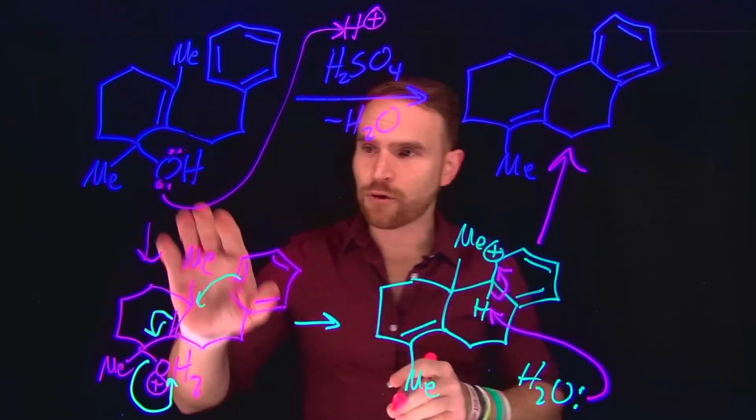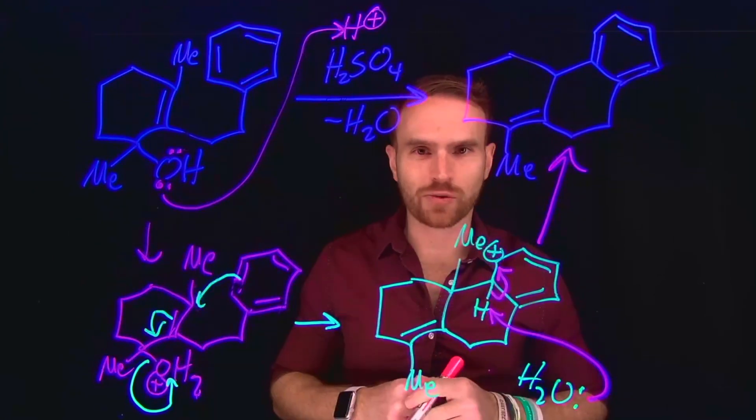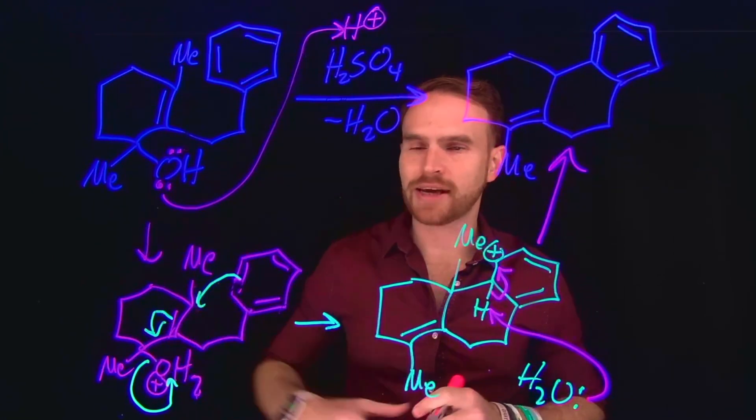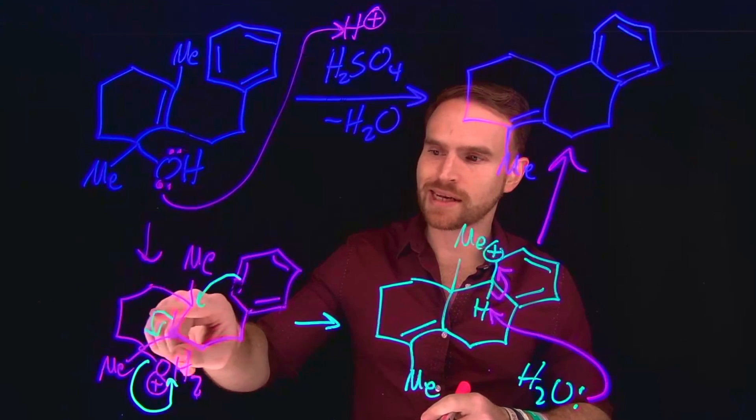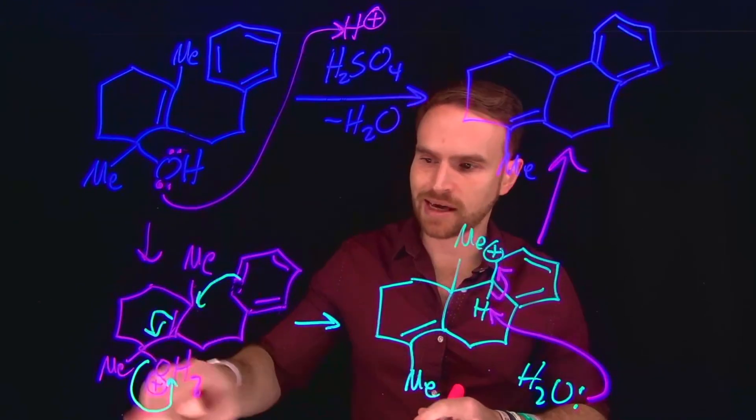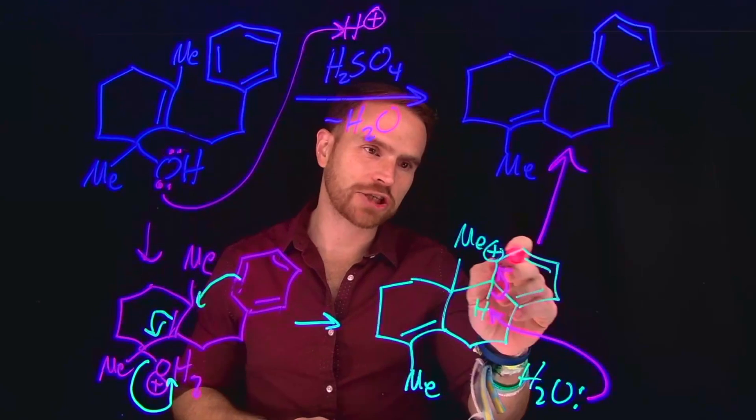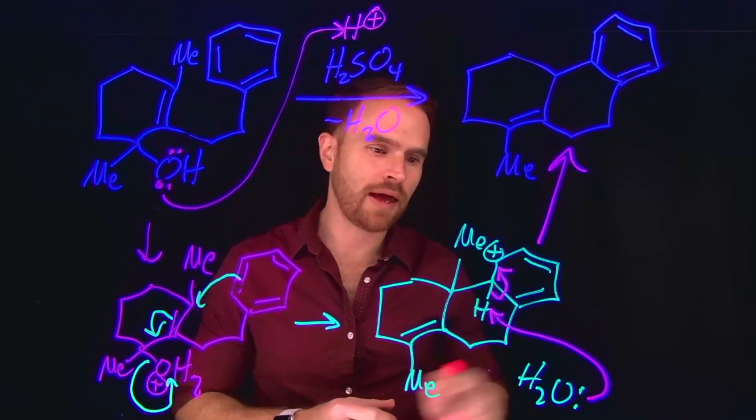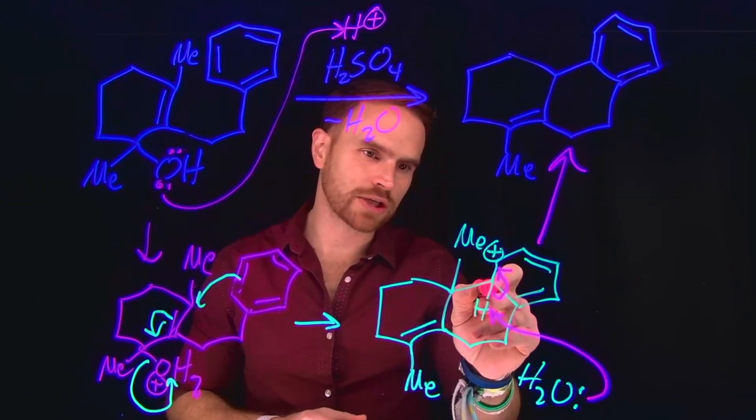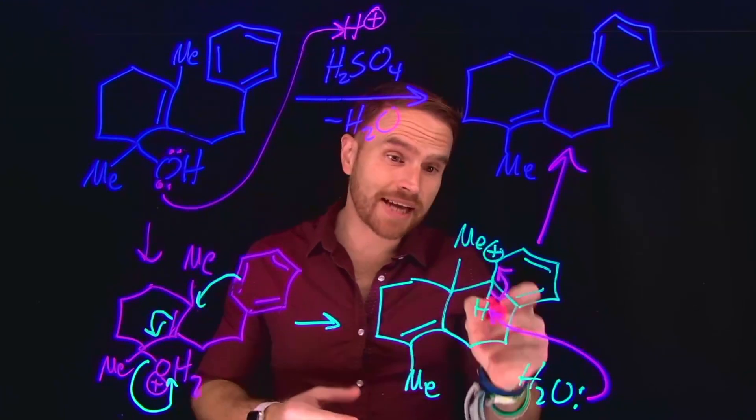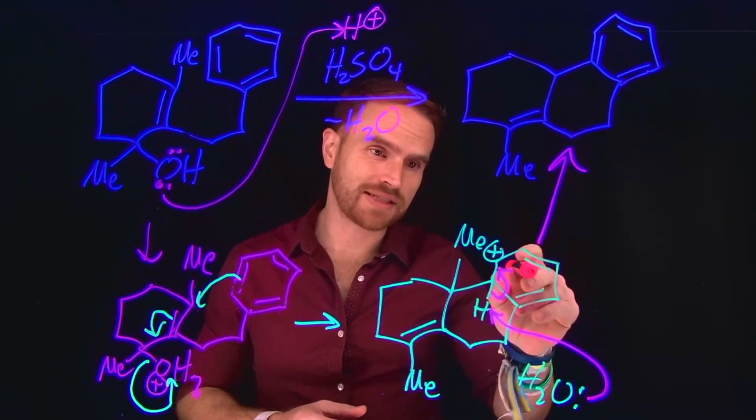So now importantly, the first step was protonation of a hydroxyl group following electrophilic aromatic substitution, which resulted in a cascade flow of electrons to kick off that leaving group. And then finally, the reformation of this aromatic ring by the deprotonation of this hydrogen to bring these electrons back to satisfy the reformation of this benzene ring.